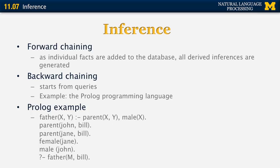Going back, we need to find statements about M being the parent of Bill. There are two possible instances: John and Jane. At the same time, we want M to be male, and there is only one such statement: male(John). Therefore, the only combination of statements in the knowledge base that satisfies the query is where John equals M, which is also equal to X, and Bill equals Y. We return that the value of M is equal to John.